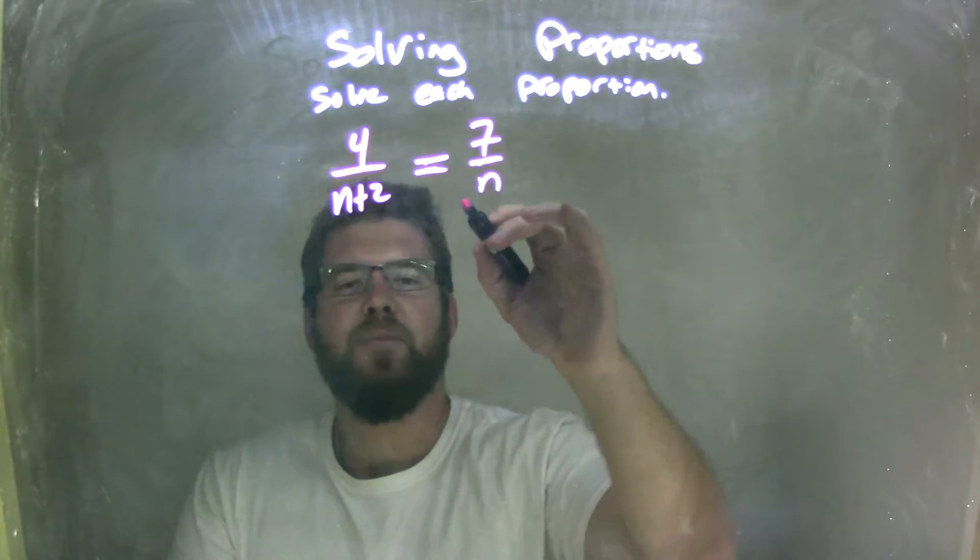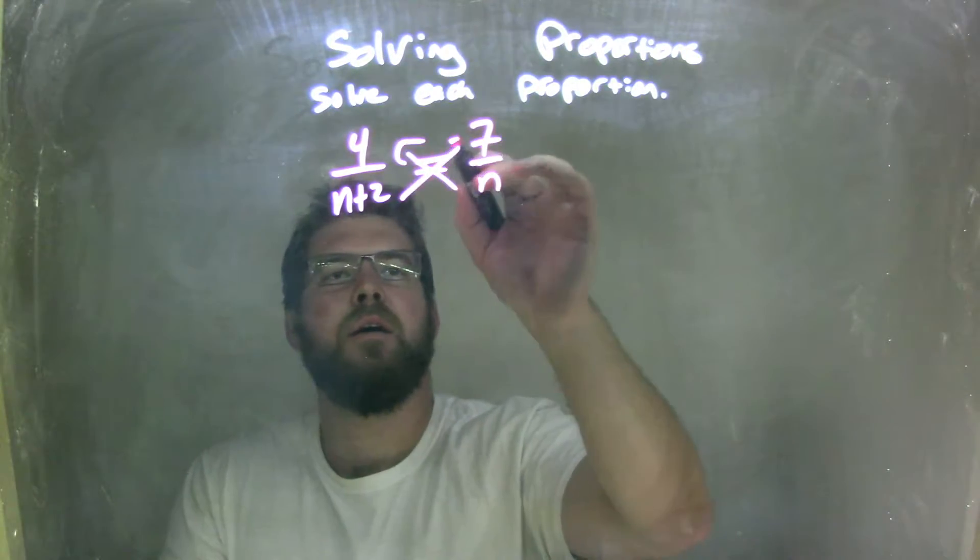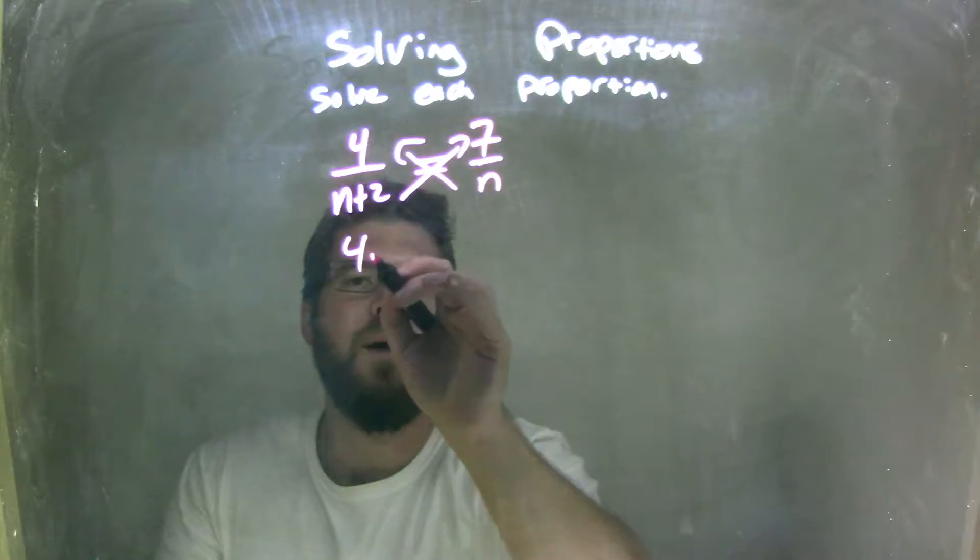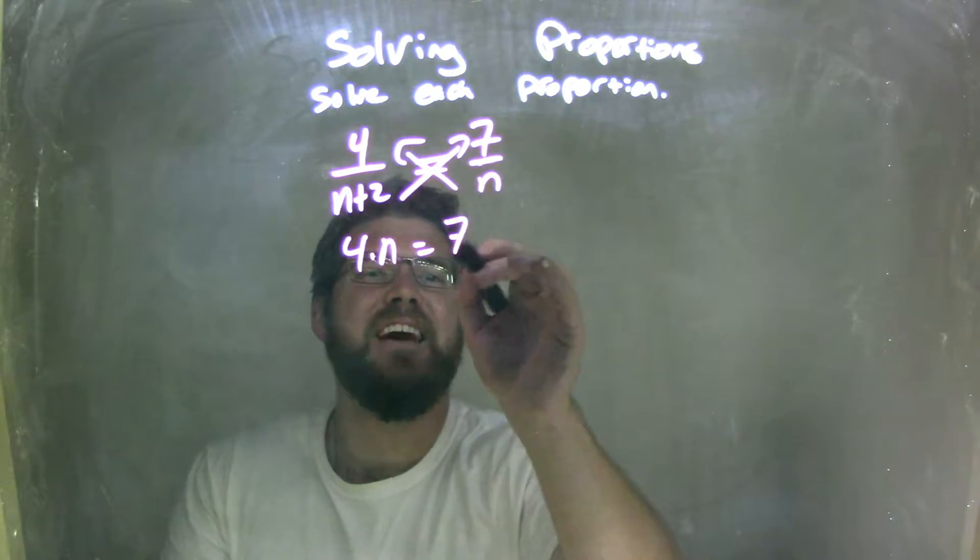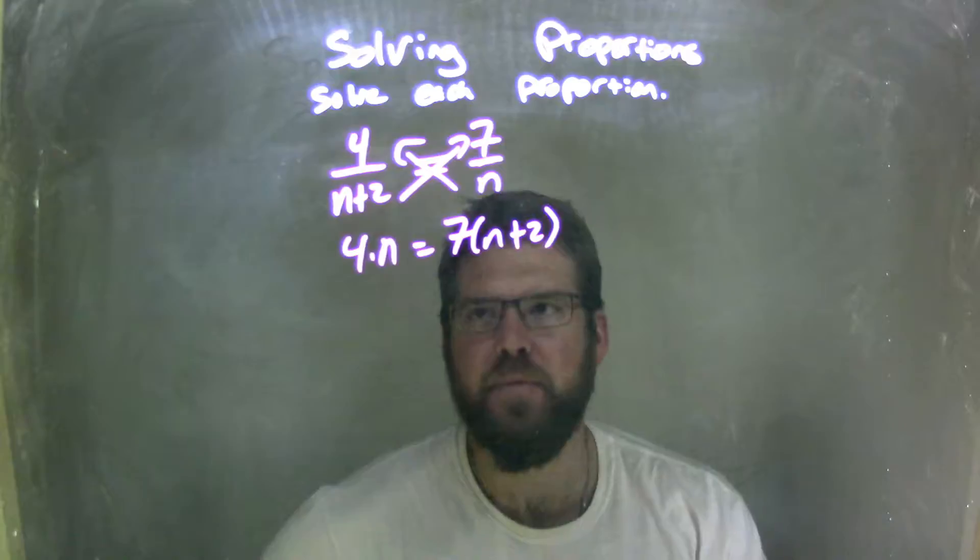I'm going to cross-multiply. That's my first step here. Cross-multiply, like that, giving me 4 times n on the left and 7 times n plus 2 on the right.